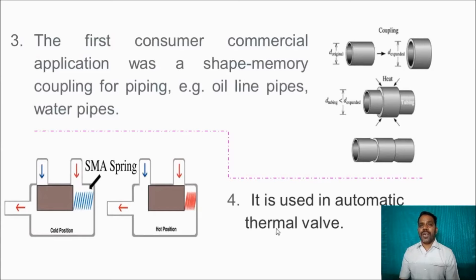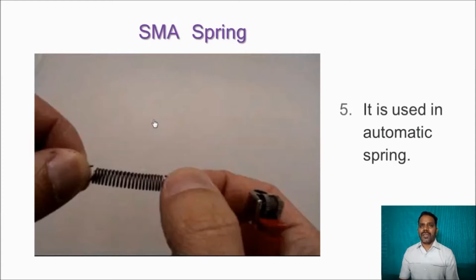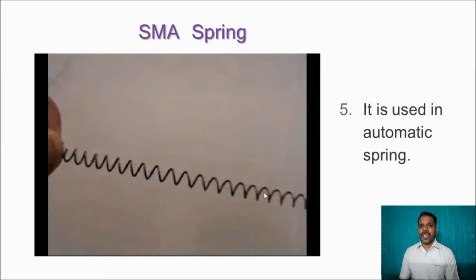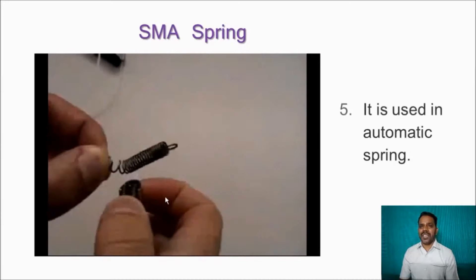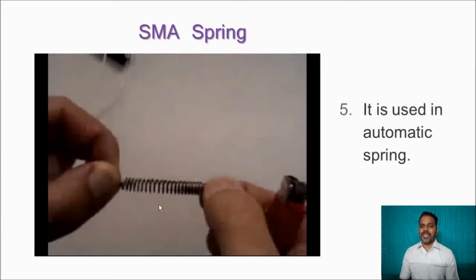An automatic thermal valve uses an SMA spring. Hot liquid flows through a tube and is allowed for a certain time. After reaching a certain higher temperature, the SMA spring automatically compresses and the valve closes, stopping hot liquid flow. Cold water then moves the other way. This acts as an automatic thermal valve. SMAs are also used in automatic springs — applying stress gives a deformed position, and applying heat energy returns it to the initial shape.